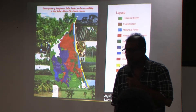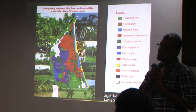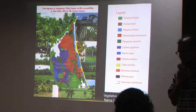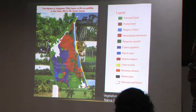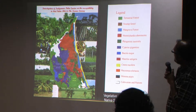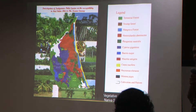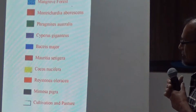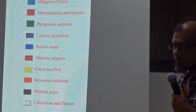This is what the vegetation structure of the Nariva Swamp looks like. There is a composition of a lot of different vegetation: we have the terrestrial forest, farm forest, mangrove, and various palm species.